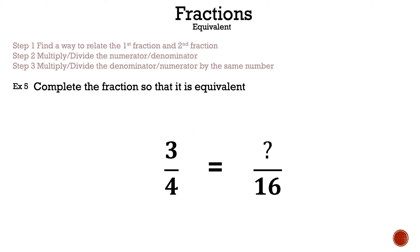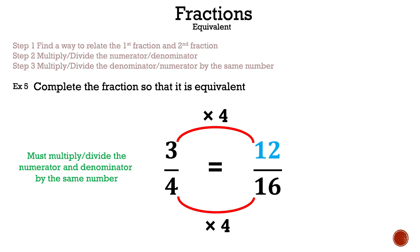Let's take a look at this example. We need to relate the denominators — how are four and sixteen related? Times four. Now since we did it to the denominators, we need to do it to the numerators. So three times four is twelve, and there we have it.